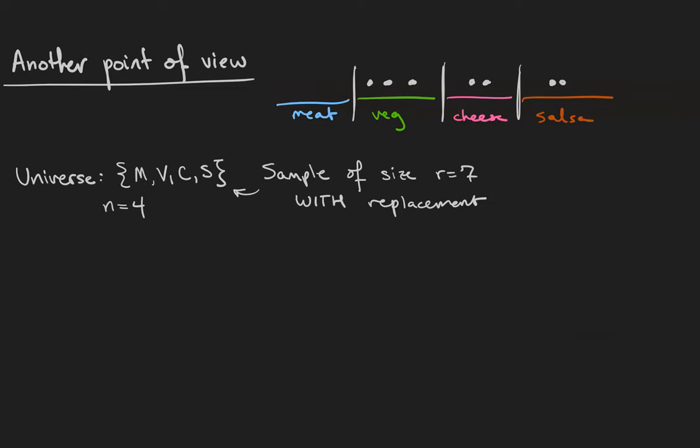Here's another point of view on the problem. We are sampling from the universe meat, veggie, cheese, salsa seven times, and there are four elements in our universe. We are allowed to replace the elements so we can choose something more than once.